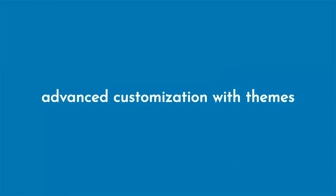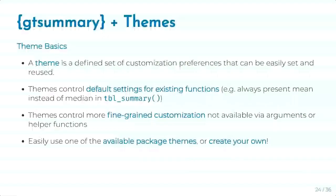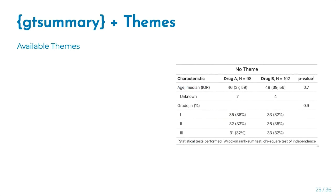We've shown how to customize individual table elements using function arguments or helper functions. Now let's introduce themes, which package many customizations together into bundles that you can easily set and reset across reports or projects. A theme is a defined set of customization preferences that controls default settings for existing functions — for example, always presenting mean instead of median for continuous variables. Themes can also control fine-grained customization options not available via existing arguments or helper functions.